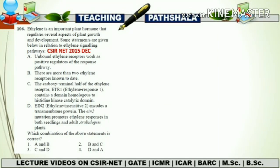Now let's look at a question from CSIR NET 2015 December. The question states: ethylene is an important plant hormone that regulates several aspects of plant growth and development. Some statements are given in relation to the ethylene signaling pathway, and you have to choose which combination of two correct statements is the right answer.